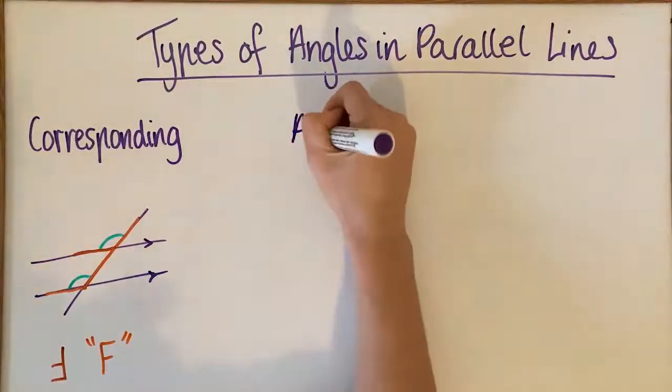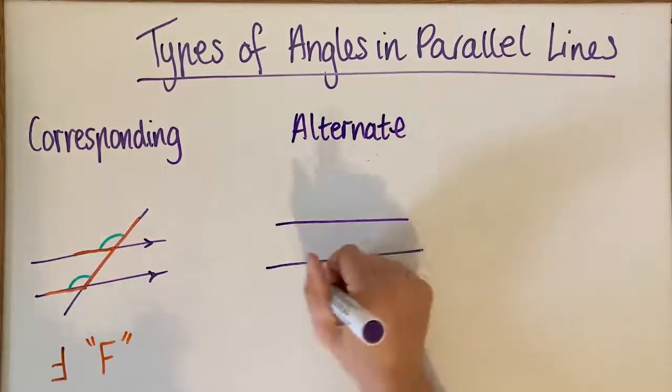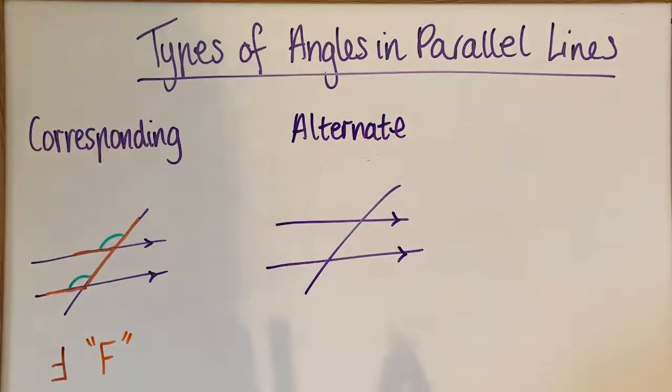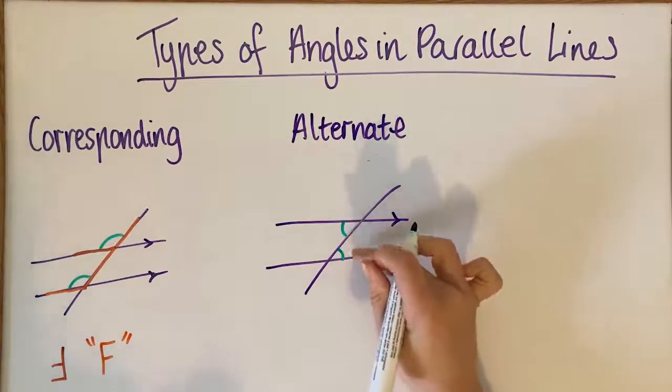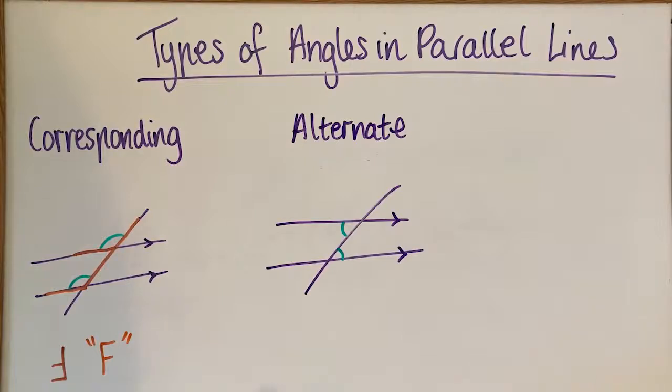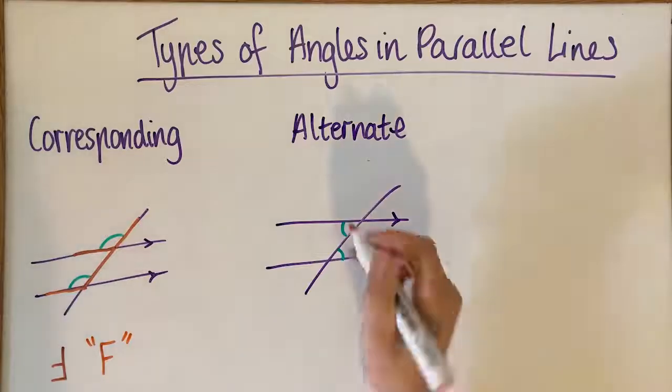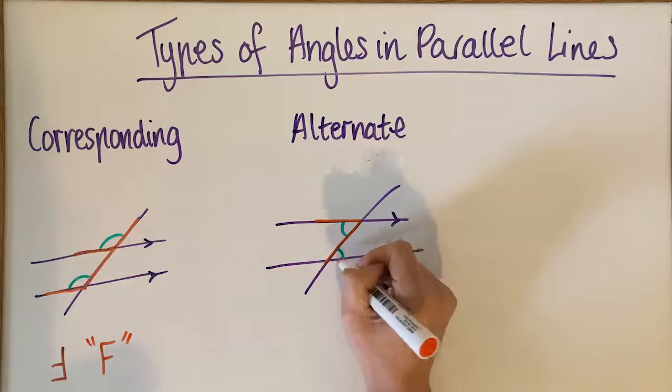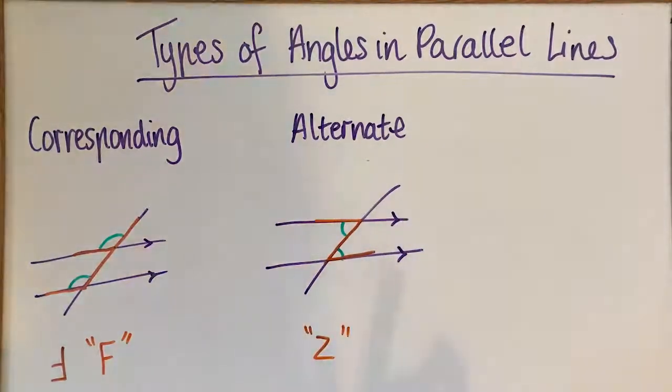The second type is called alternate or alternate angles. Alternate angles generally are in the middle and they're alternate to each other, so they're kind of on the opposite side to each other. They sit in the middle but on opposite sides of that middle line, and these are sometimes called Z because if I go across that angle and across this angle, alternate angles are sometimes called Z angles.